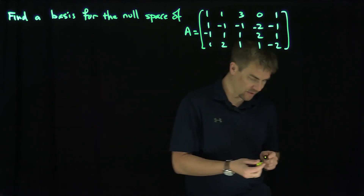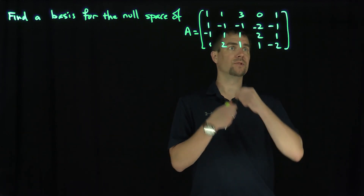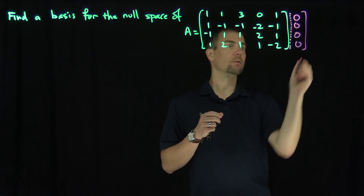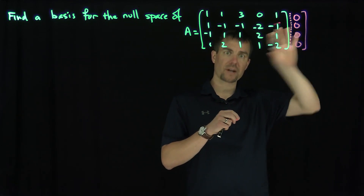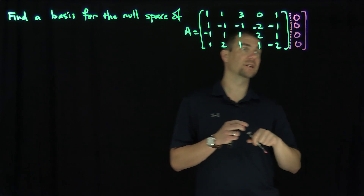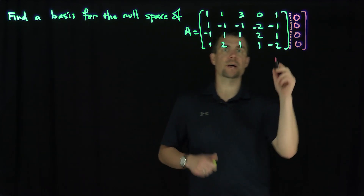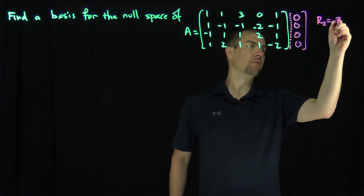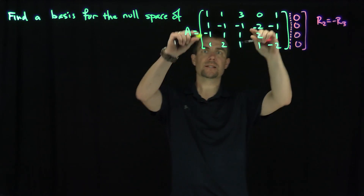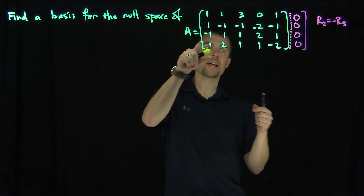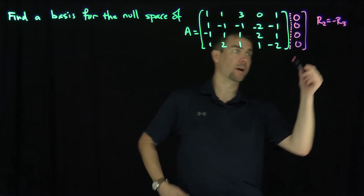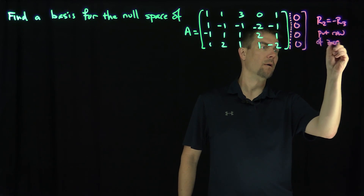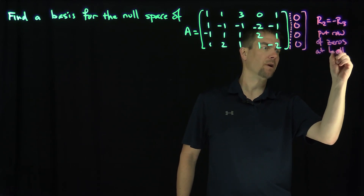I'm going to imagine there's an augmented column of zeros over here — 0, 0, 0, 0. Of course, the row operations we perform won't change anything, so I'm going to suppress that column of zeros to keep the problem clean. The first observation we're going to make about A is that row two and row three are opposites of each other — row two is negative row three. So I'm going to add row two and row three together to get a row of zeros, and put that row of zeros at the bottom.